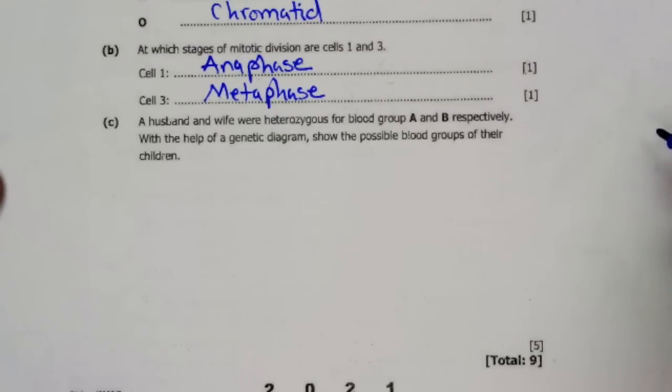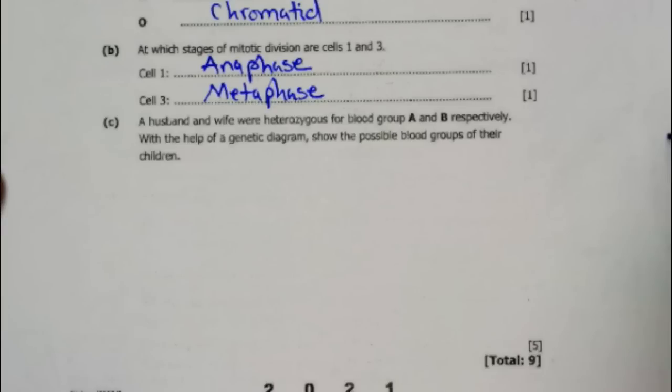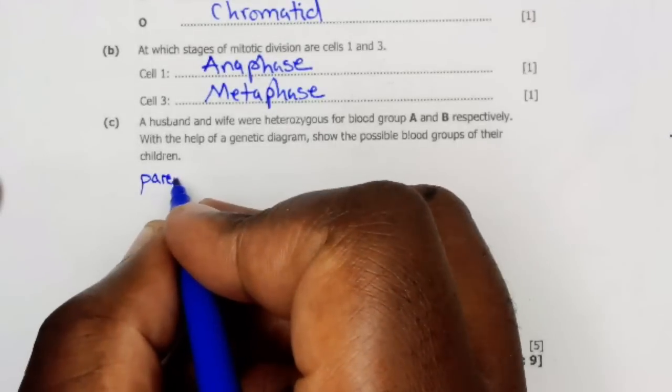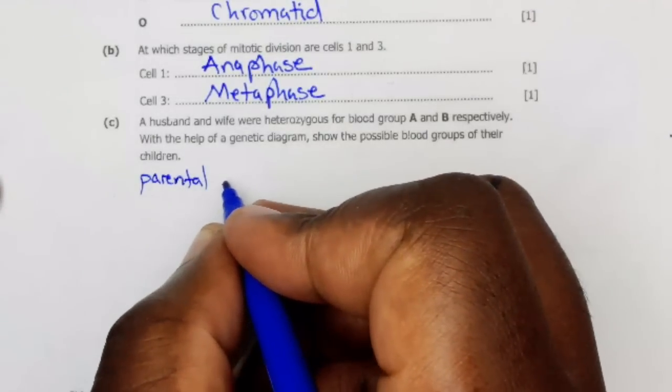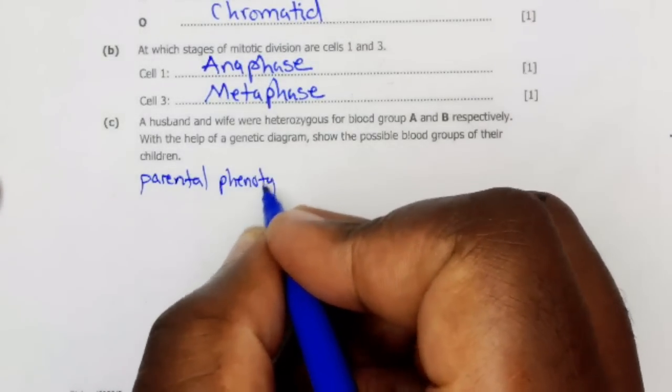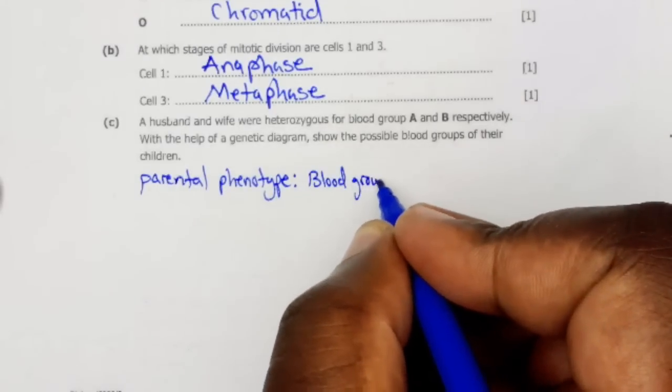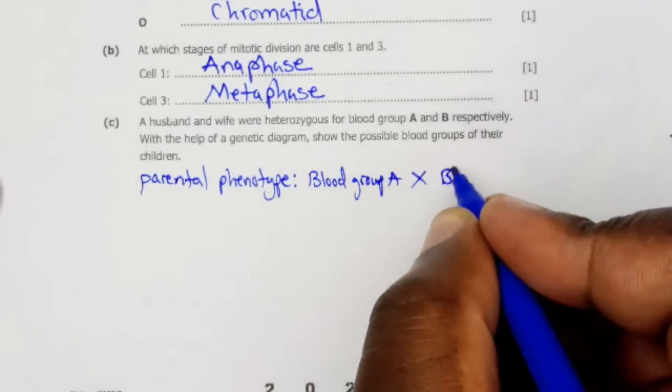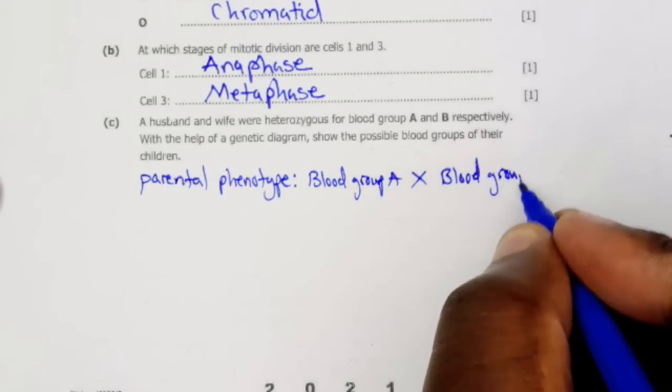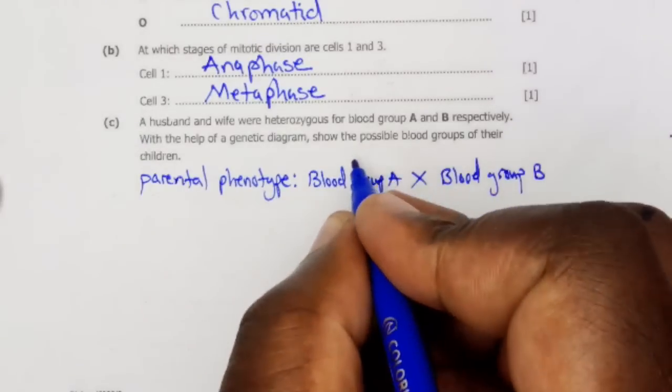Part C: A husband and wife were heterozygous for blood group A and B respectively. With the help of a genetic diagram, show the possible blood groups of their children. When writing a genetic cross, we first start with the parental phenotype of the father, blood group A being crossed with blood group B. Then we indicate on top mother and father.